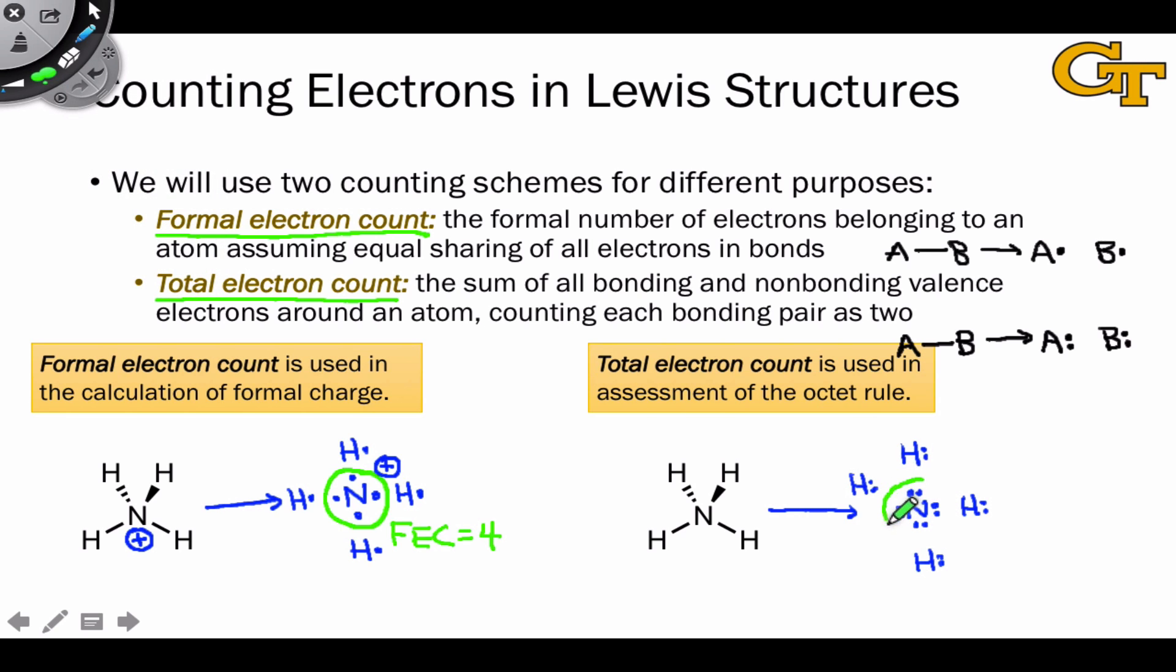So if we focus on the nitrogen, what we find now is that the total electron count is eight, and each of the hydrogens has a total electron count of two, and so while the nitrogen is obeying the octet rule, the hydrogens are actually exceptions to the octet rule, and we'll talk more about the octet rule and its exceptions here in a second.